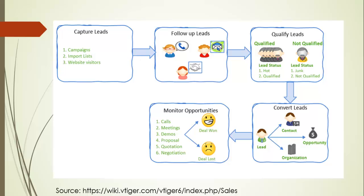You then follow up with the opportunities. You can monitor those opportunities by calling, meetings, demos, proposals, quotations, and negotiation. After following up with the opportunity, you can either win the deal or you might lose the deal, and then you can retarget them after a certain time. This is the overall sales process automation inside vTiger CRM.